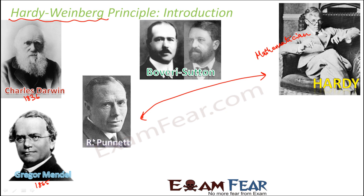If you look at the concept of the Punnett square, we actually try to find out the gametes and then look at all the combinations possible. With that, we can determine the probability of what kind of offspring will be produced in the next generation. This work was possible only with the help of the mathematician Hardy. So Hardy gave this principle somewhere around 1908.